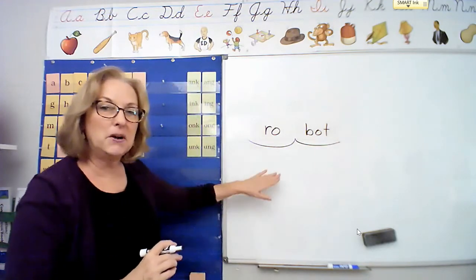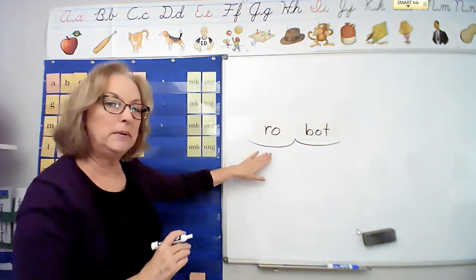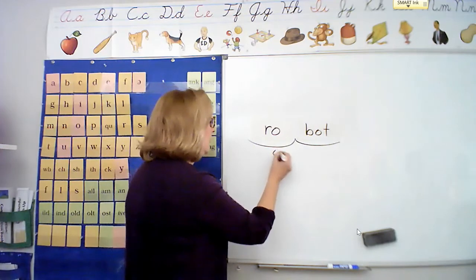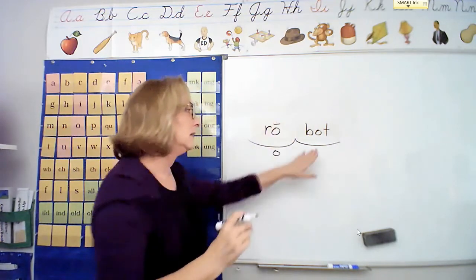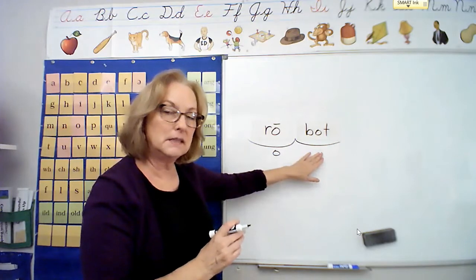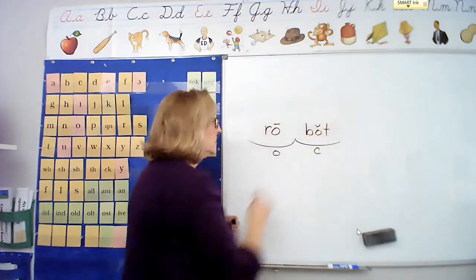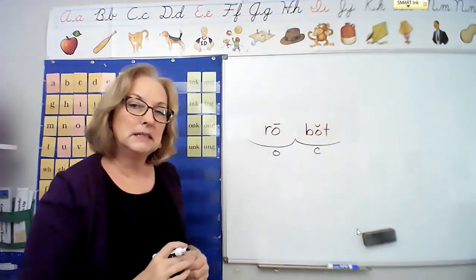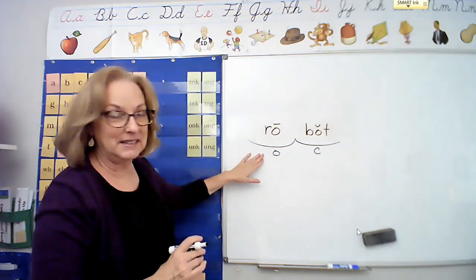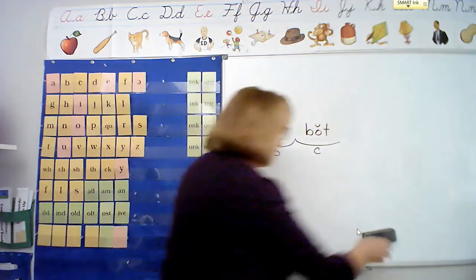Let's mark our syllables. My first syllable, open, closed, vowel consonant e? It's open. My second syllable, open, closed, or vowel consonant e? It's a closed syllable. One vowel closed in, therefore my vowel is short. All right, how'd you do? Great. Go ahead and erase your boxes and get ready for the next word.